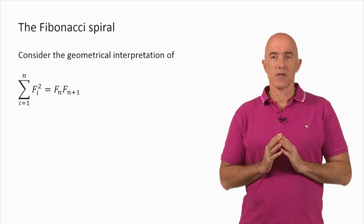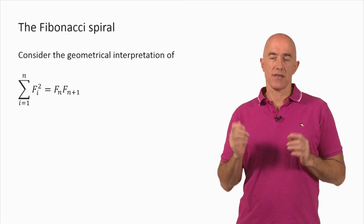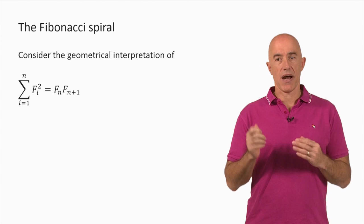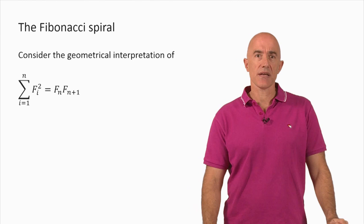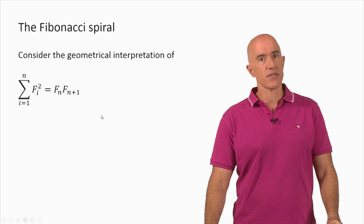To understand how to get the Fibonacci spiral, we can go back to an identity that we derived: the sum of the first n squares of the Fibonacci numbers — the sum from i equals 1 to n of F sub i squared — is equal to the nth Fibonacci number times the (n+1)th Fibonacci number. We can consider the geometric interpretation of this identity.